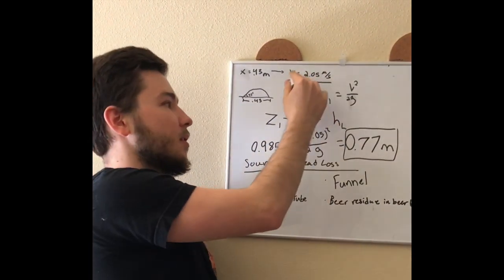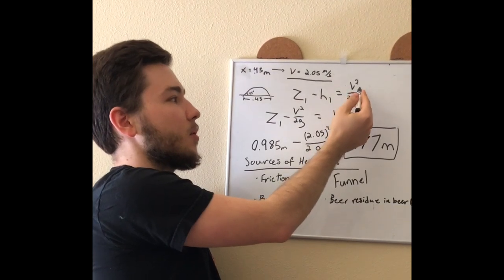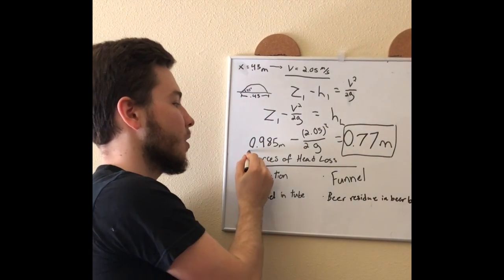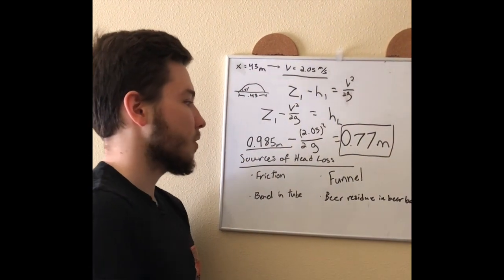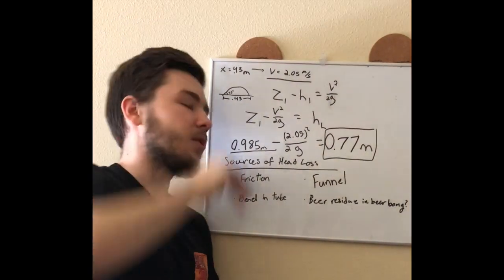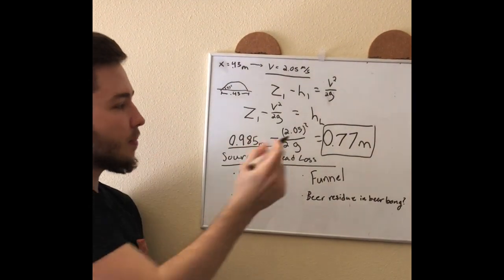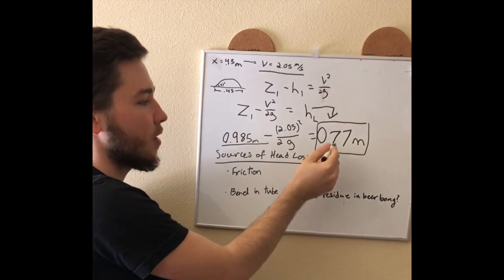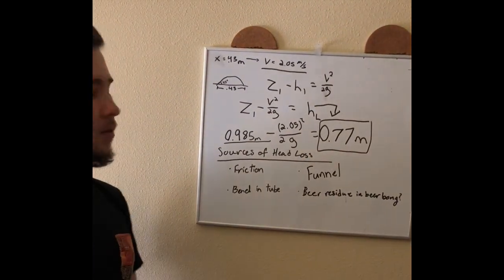We plug this into the velocity in Bernoulli's equation, and our z from before was about 0.85 meters, that was the height of the funnel, the whole system. From that we can then solve for the head loss, which we found to be 0.77 meters.